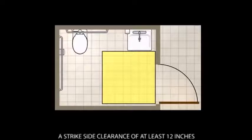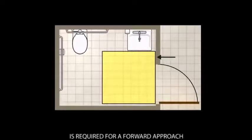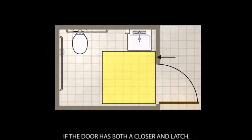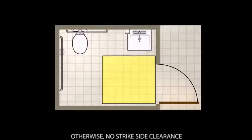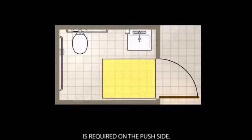On the push side, a strike side clearance of at least 12 inches is required for a forward approach if the door has both a closer and a latch. Otherwise, no strike side clearance is required on the push side.